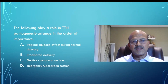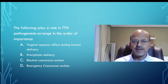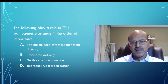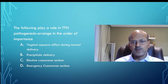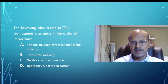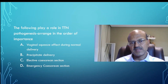The question here: the following play a role in TTN pathogenesis — I would like you to arrange it in order of importance. We have four choices: vaginal squeeze effect during normal delivery, precipitate delivery, elective cesarean section, and emergency cesarean section. Remember, you need to put it in the order of importance — which is more likely to cause TTN in this sequence.